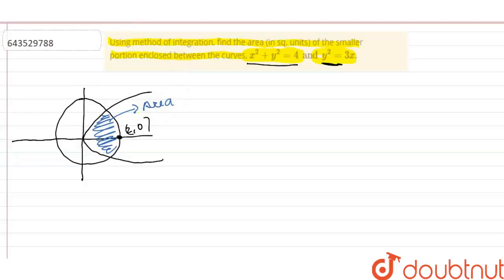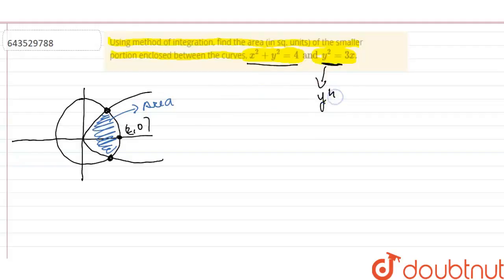First of all, we need to find the intersection points between these curves. From the parabola y² = 3x, we square both sides to get y⁴/9 = x².